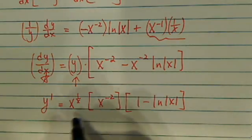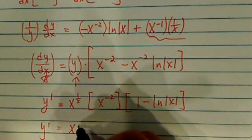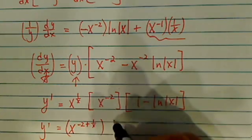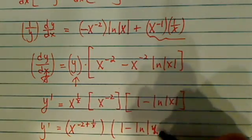So if you want to combine this one more term, we have x to the minus 2, plus 1 over x, times 1 minus natural log of x over here.